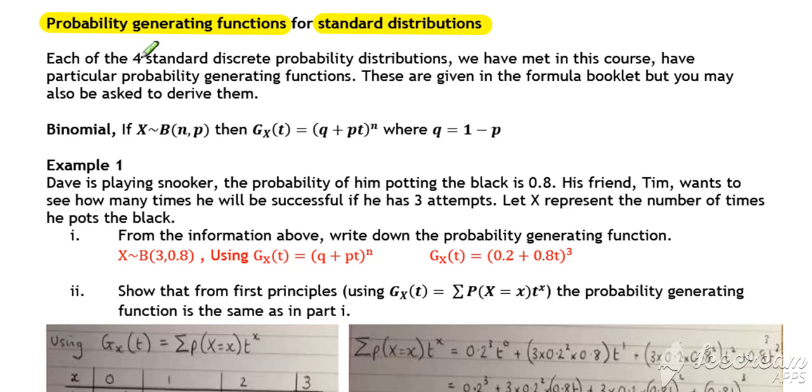For each of the four standard discrete probability distributions, we have a particular probability generating function. You do get these all in the formula booklet in the same place as all the other information regarding the four main discrete distributions. But you may be asked to derive them. So we'll look at their use and their derivations in the main content.